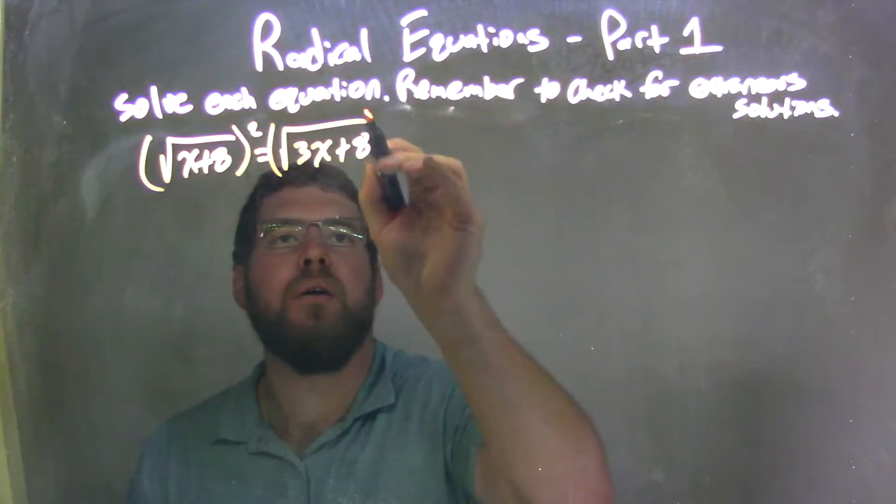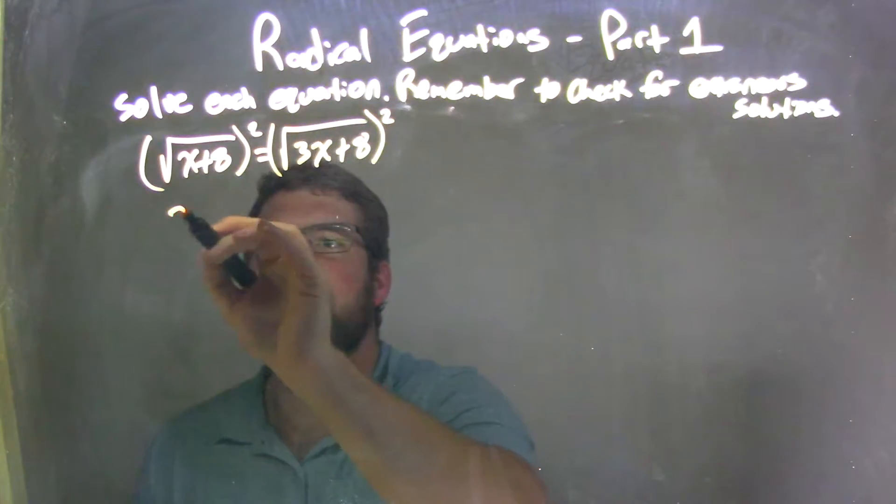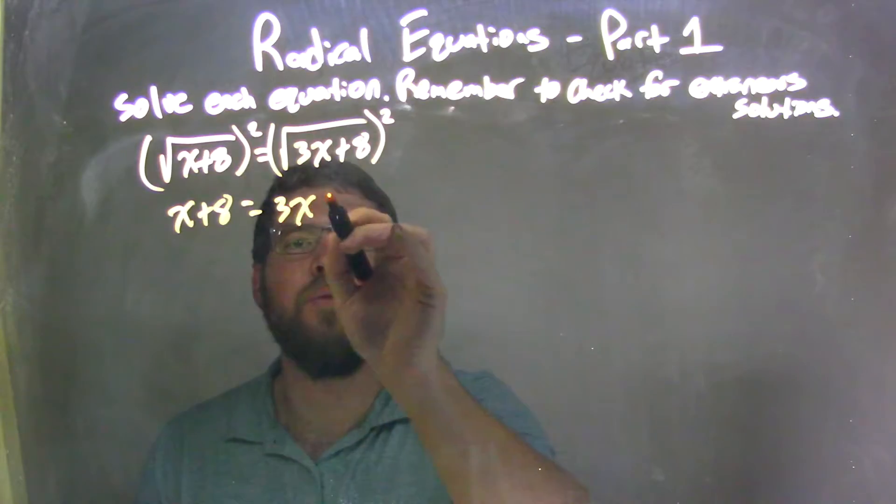And what that does, it's going to get rid of my square root. So I'm left with x plus 8 equals 3x plus 8.